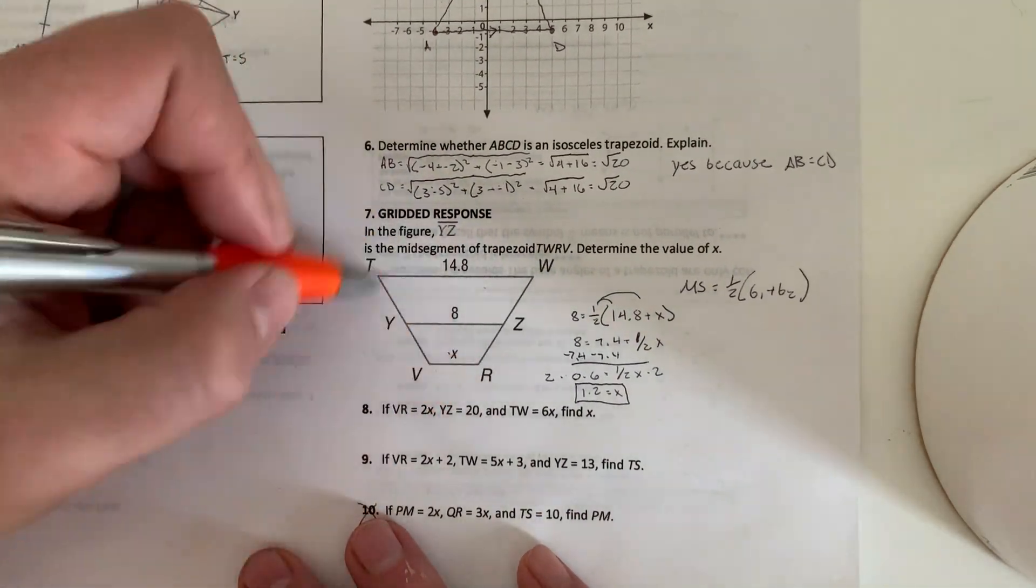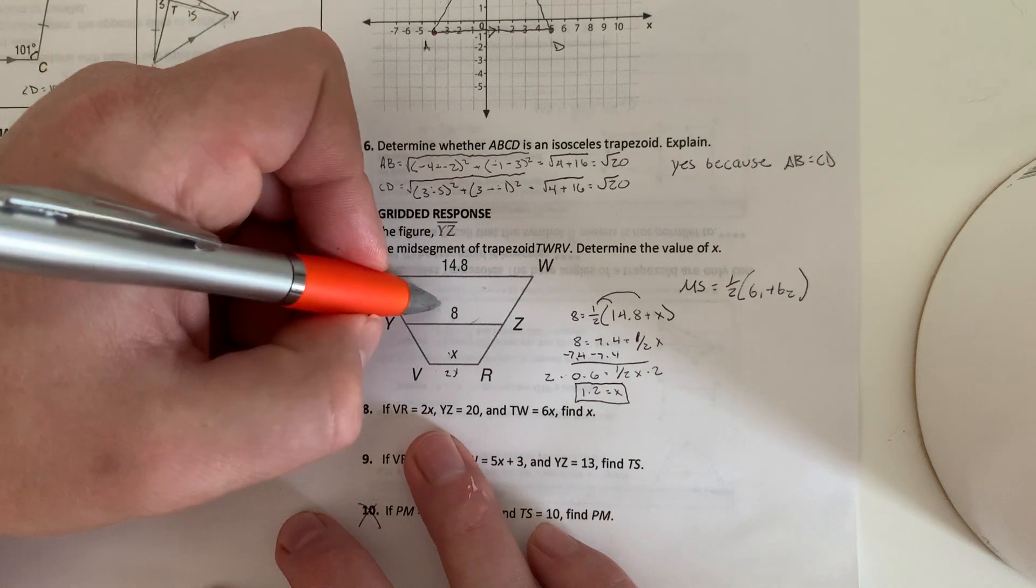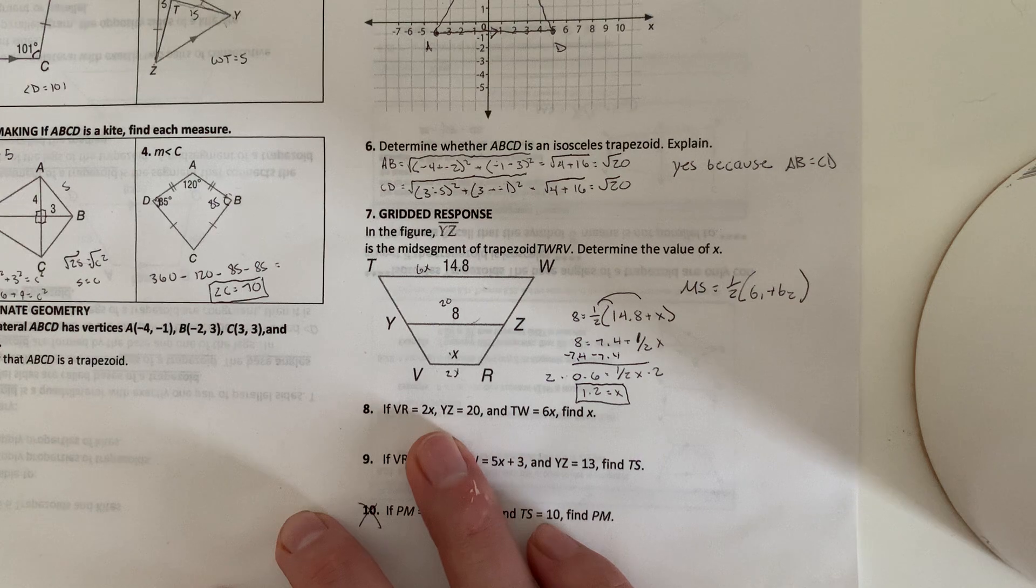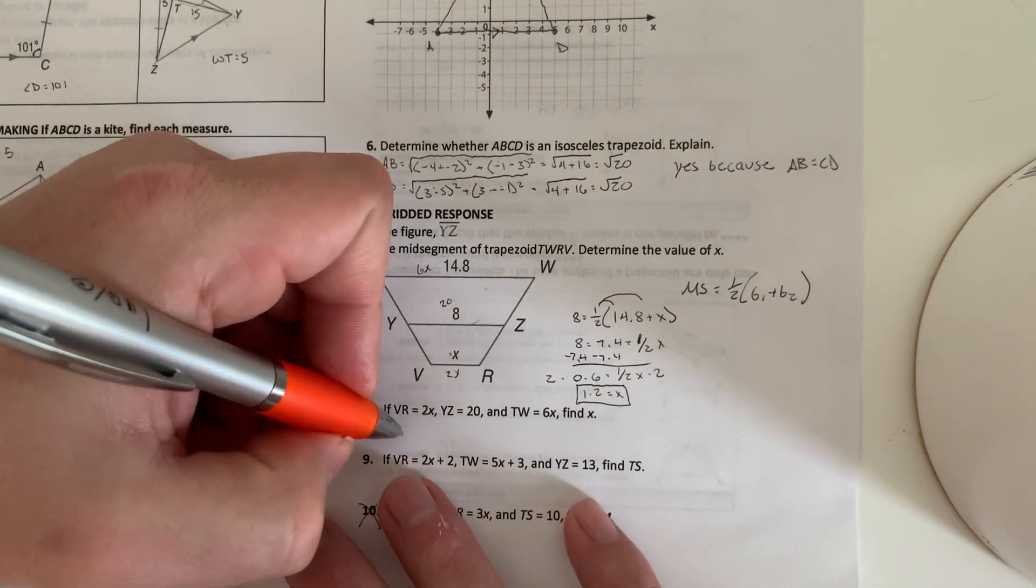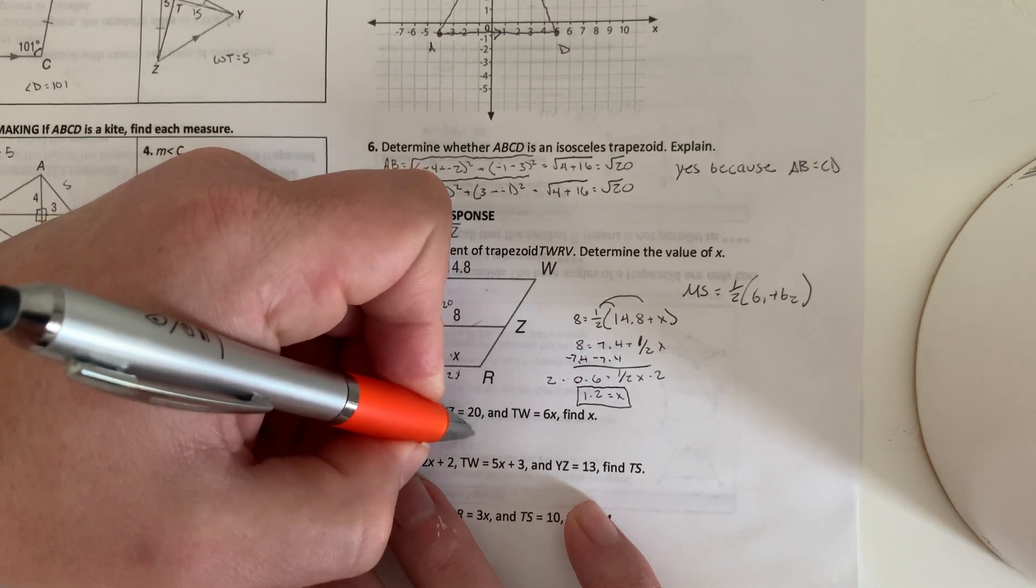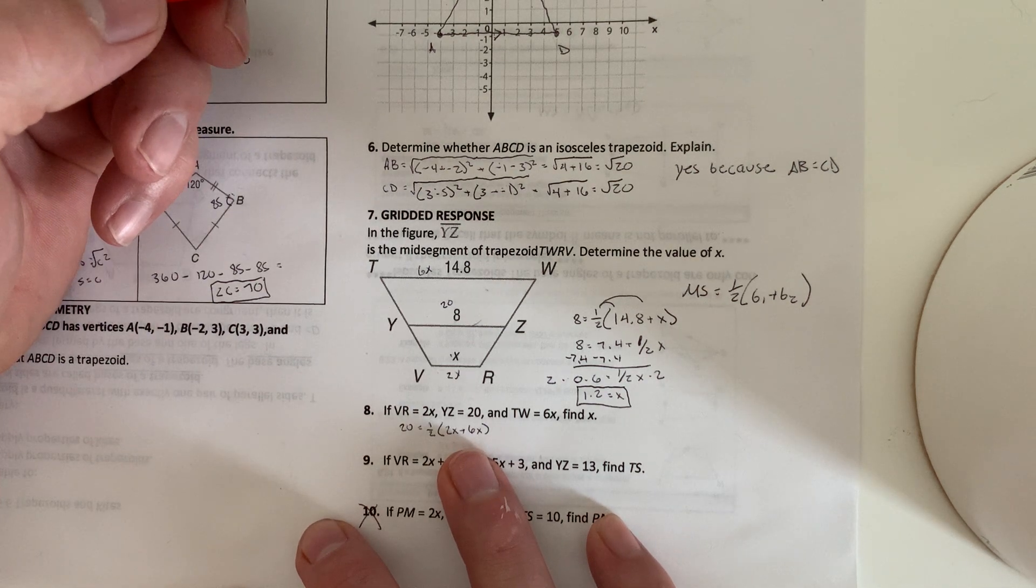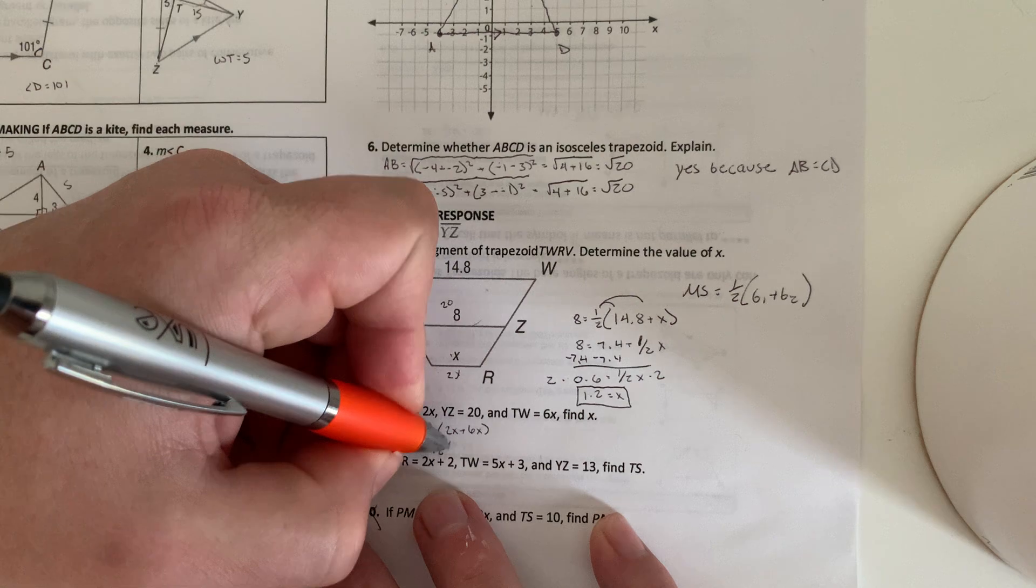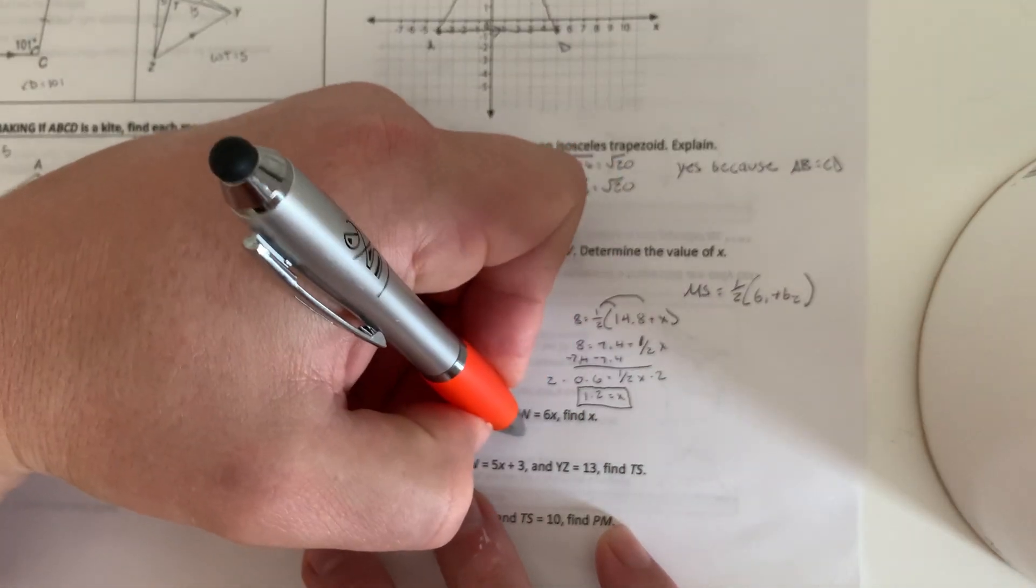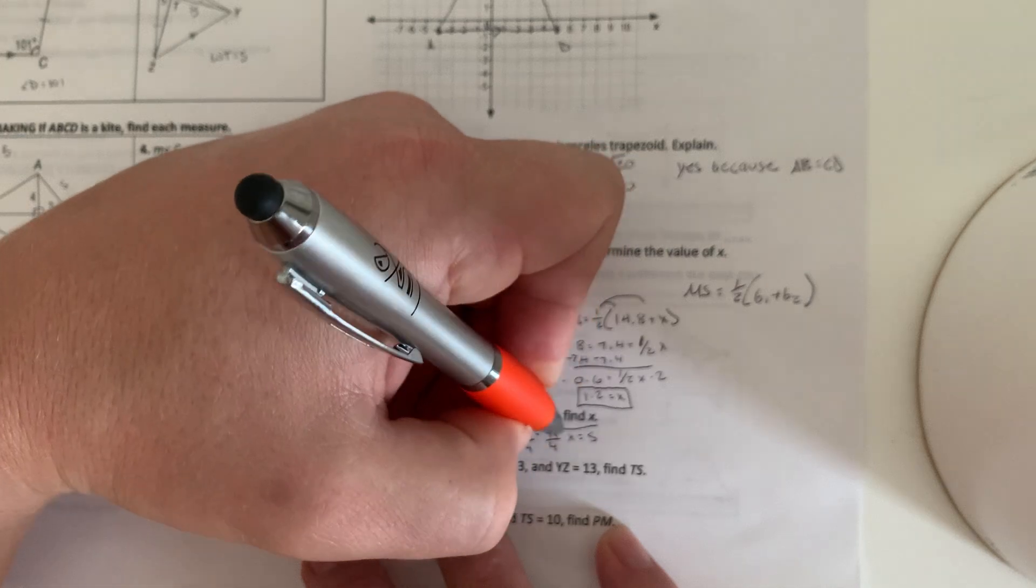All right, so still using this figure for the next two. If VR equals 2X, so now it equals 2X, YZ equals 20, and TW equals 6X. All right, we're using the same formula. So we're going to have 20 equals 1 half of 2X plus 6X. 2X plus 6X is 8X. So 20 equals 1 half 8X. Distribute the 1 half. So we'll do 1 half of 8X is 4X. Divide by 4. X equals 5.